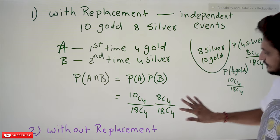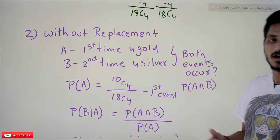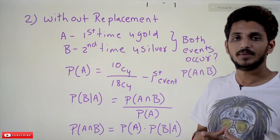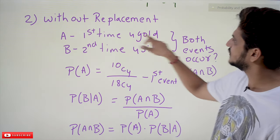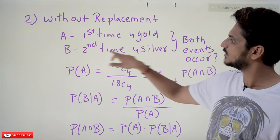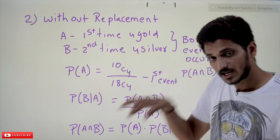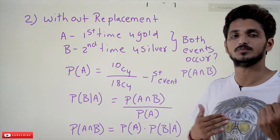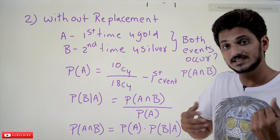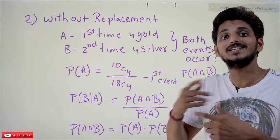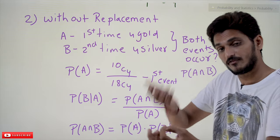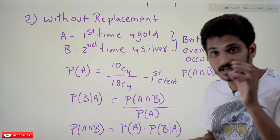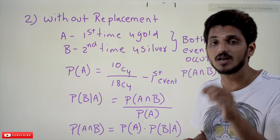If you don't replace the coins back, they are dependent events. Our events are: first time select four gold coins, second time select four silver coins. If you select four gold coins the first time, out of 18 coins four are missing for the second draw. So the probability of selecting silver coins the second time is changing because the first event is going to affect the probability of the second event — they are dependent events.